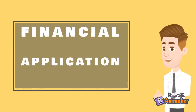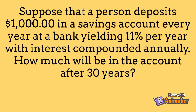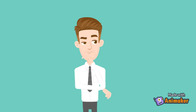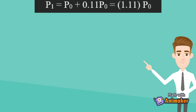Now I will show one example of a financial application. Suppose that a person deposits $1,000 in a savings account every year at the bank, yielding 11% per year with interest compounded annually. How much will there be in the account after 30 years? The person deposits $1,000 every year from year 1 through year 30. We let P1 equal the amount of money in the bank account, and P0 equals $1,000. From the question, P1 equals to P0 plus 0.11 P0, which simplifies to 1.11 P0.